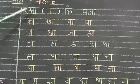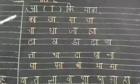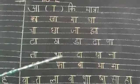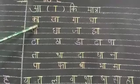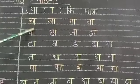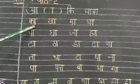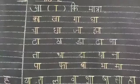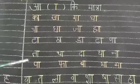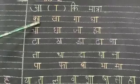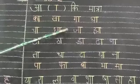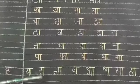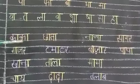Today I am going to explain to you by using this venture on the board. We are adding the Aa-ki maatra here. I have highlighted the maatras with color so you can see them clearly. Children, while you are writing the classwork, you have to write the same way I have written here and highlight the maatras with a pink color pencil.